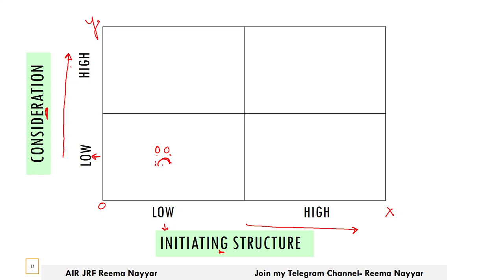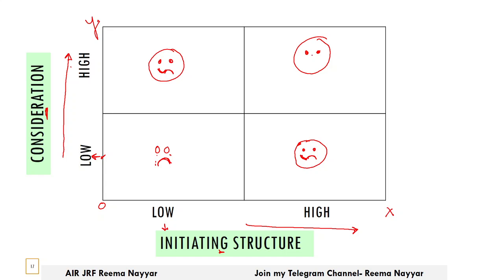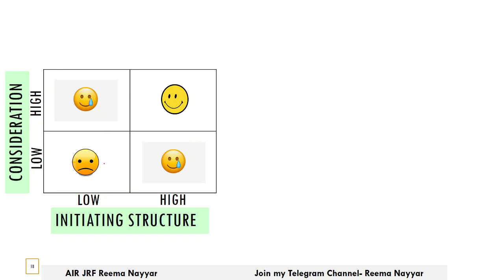From a leader's perspective, when attention to both work and employees is low — that is not a good style at all. When attention to work is high but attention to people is low — good in one way but sad because employees are neglected. Similarly, when attention to employees is high but to work is low — mixed feelings. When both dimensions are high — attention to people and to work both — that style is the best.